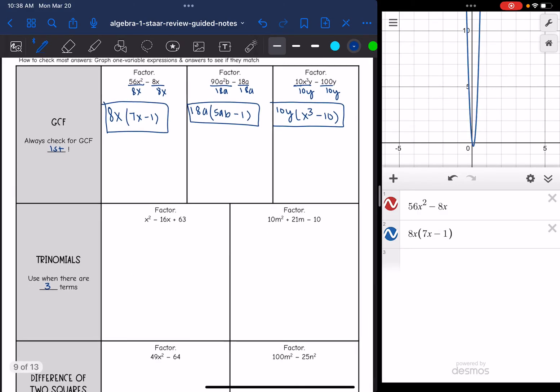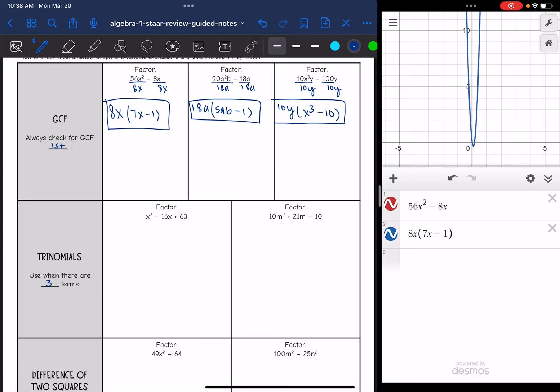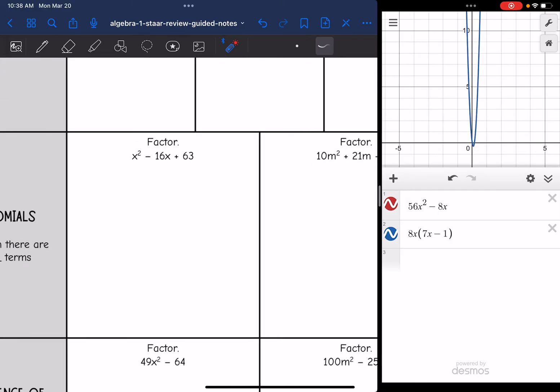Okay, the second type of factoring you will encounter on your STAR test is trinomials. You are going to use this when there are three terms. You're always going to want to check for GCF first, even if you see three terms. But if you see the three terms, then you are going to factor them. We factor this using the x.